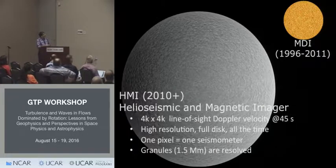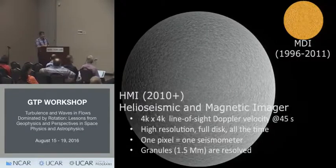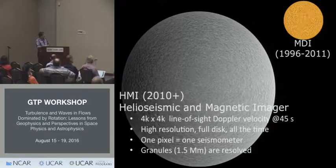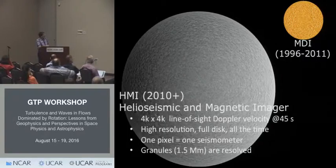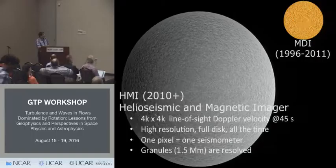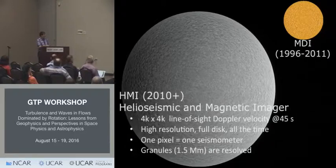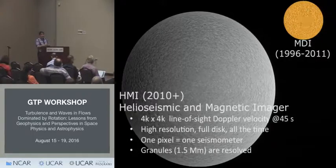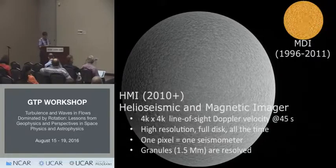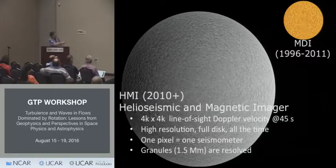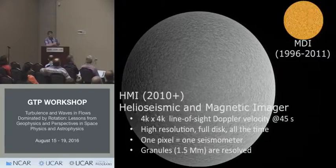Here you have a beautiful doppelogram from the SDO HMI instrument — it's a 4K by 4K Doppler image showing the line-of-sight component of velocity on the surface of the sun. It's high resolution, full disk, all the time. For seismologists, you can think of every single pixel here as being one seismometer. The resolution is sufficient to resolve the granules, which have a size of about 1.5 megameters.